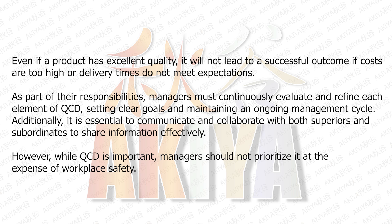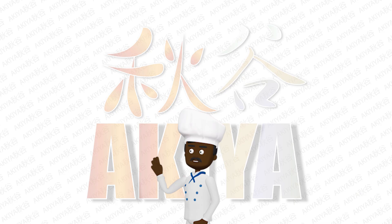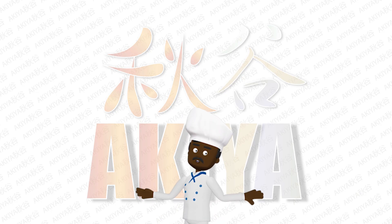Even if a product has excellent quality, it will not lead to a successful outcome if costs are too high or delivery times do not meet expectations. As part of their responsibilities, managers must continuously evaluate and refine each element of QCD, setting clear goals and maintaining an ongoing management cycle. Additionally, it is essential to communicate and collaborate with both superiors and subordinates to share information effectively. However, while QCD is important, managers should not prioritize it at the expense of workplace safety. This QCD method serves as a foundational concept in our study textbook; we will explore it in greater detail in Chapters 4 to 6. For now, focus on understanding the basics.